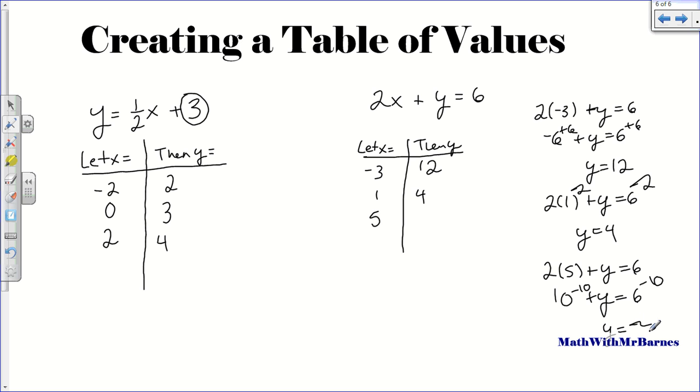And there it is. So I created my table of values, even though my equation is not y equals mx plus b. Now, of course, if you wanted to, you could have done this right away. Y is equal to negative 2x plus 6. So I'll just take 2x across the other side and make it negative. And that will be easier to make your table of values from. But if you don't want to do that, you don't have to.